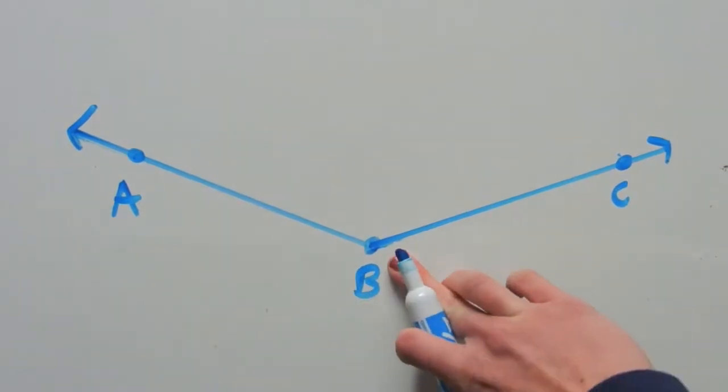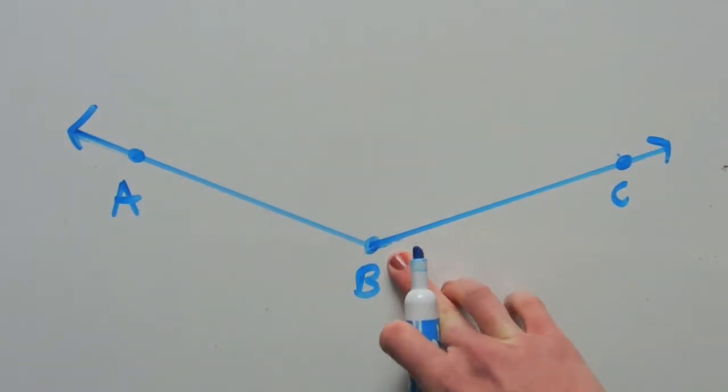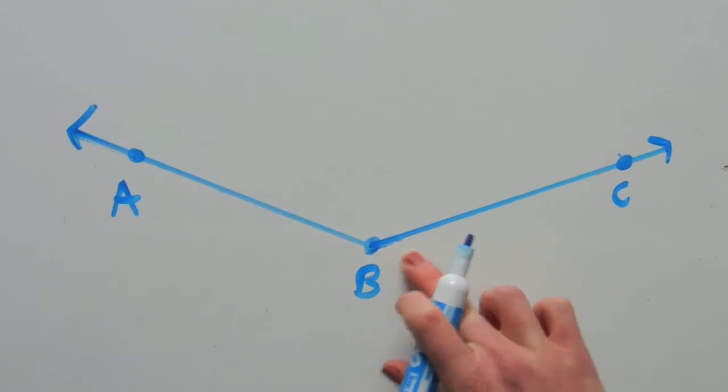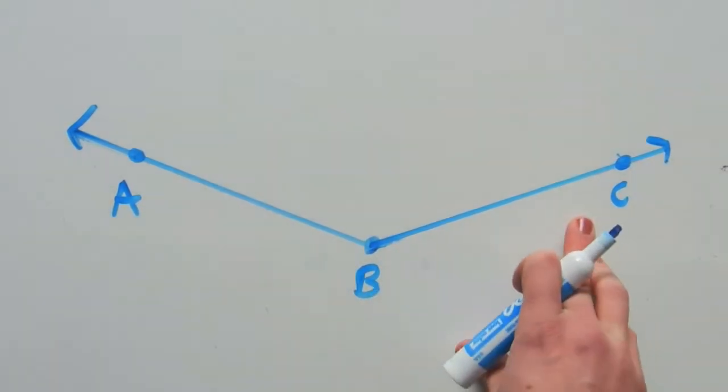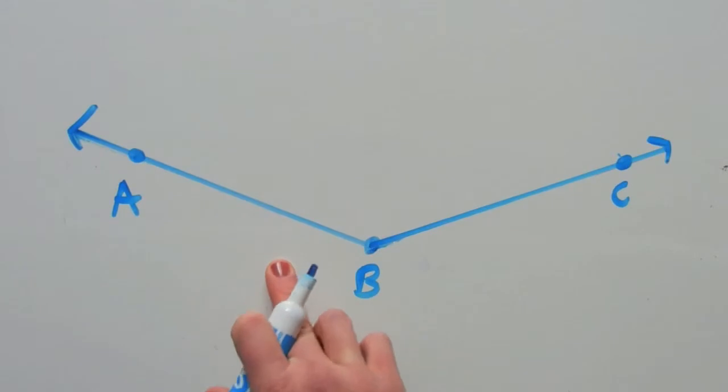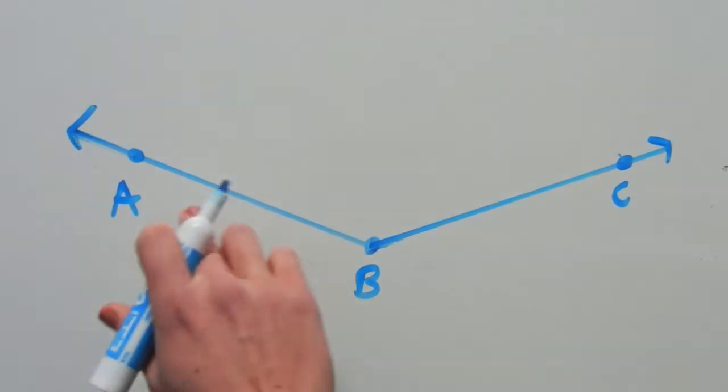So our vertex is point B, and out of B extends one ray, BC, so our side is BC, and our other side is the other ray, BA.